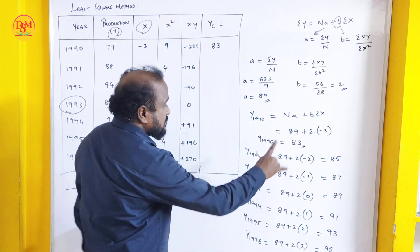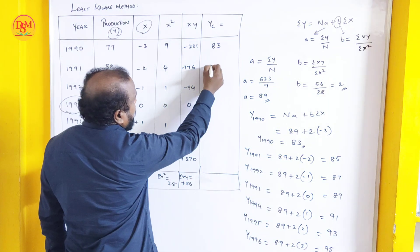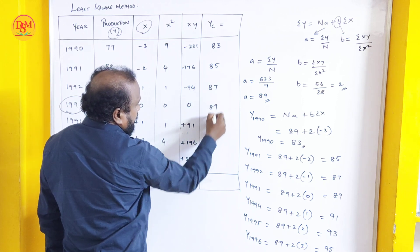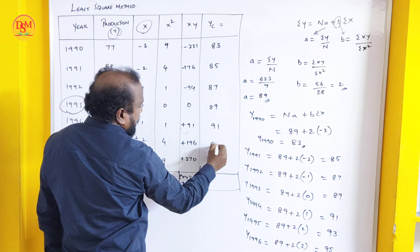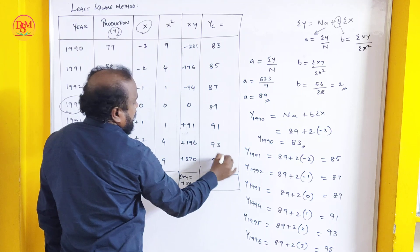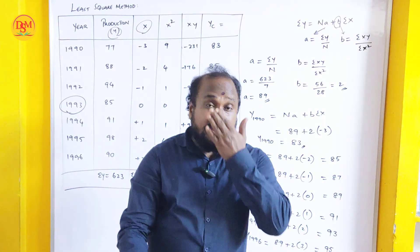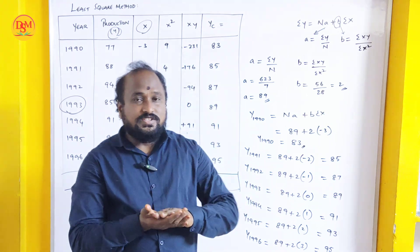Now write down these trend values here: 83, next is 85, 87, 89, 91, 93, and 95. These are the trend values which we have to calculate by using least square method.